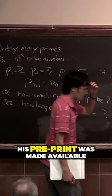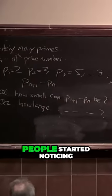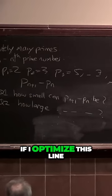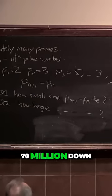So very quickly after his preprint was made available, people started noticing if I optimize this line, I can change 70 million down to 63 million.